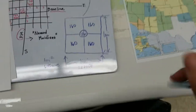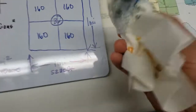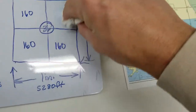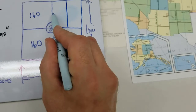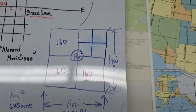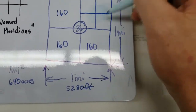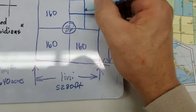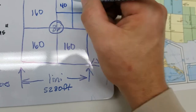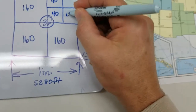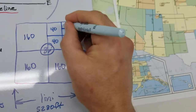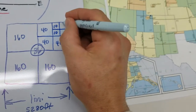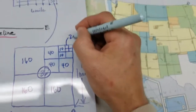I'm going to subdivide one quarter further. If this is 160 acres and we quarter that, each one of those is 40 acres. And if I quarter one of those, each piece is 10 acres. And if I quarter that again, each piece is 2.5 acres.